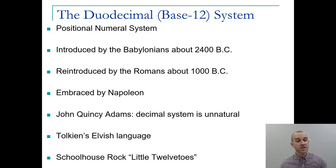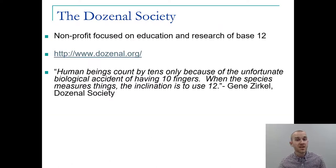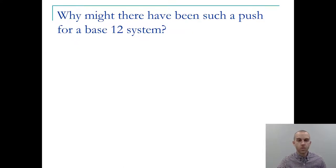More recently, J.R.R. Tolkien with the Lord of the Rings series created an elvish language that used the base 12 system. Schoolhouse Rock made educational videos including one about the base 12 system called Little Twelvetoes, which you can find on YouTube. There's also been a society called the Dozenal Society, a nonprofit that focuses on educating and researching the base 12 system. As one of their members said, human beings count by tens only because of the unfortunate biological accident that we have ten fingers. When the species measures things, the inclination is to use 12.